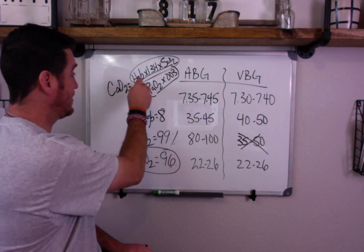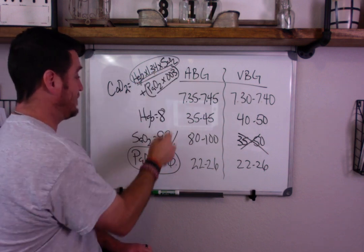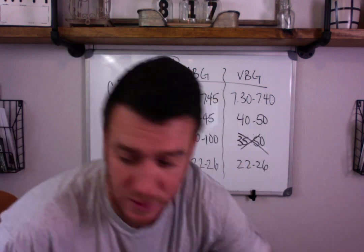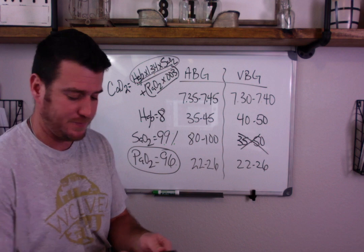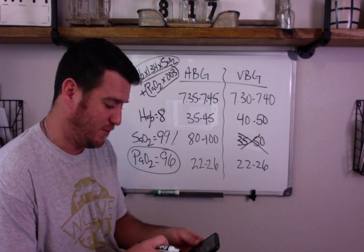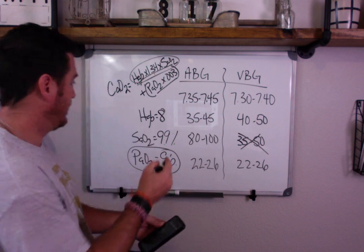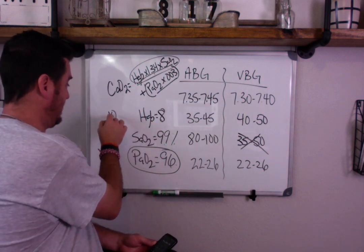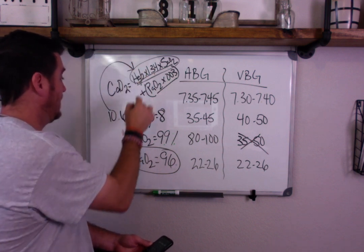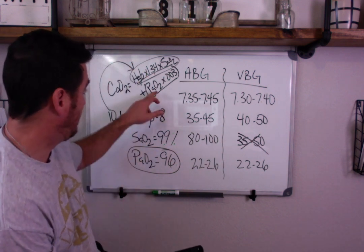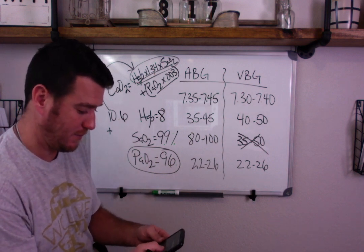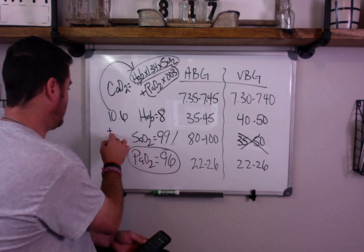But when we put these numbers into this formula, 8 times 1.34 times 99% is going to give us a number. We can do the calculations here real quick. When we do 8 times 1.34 times 0.99, we get 10.6.